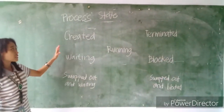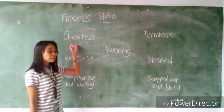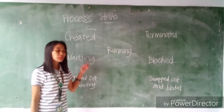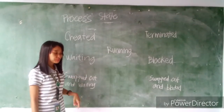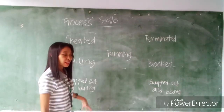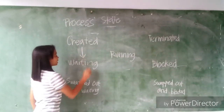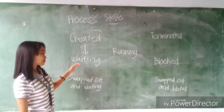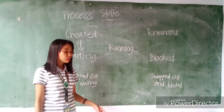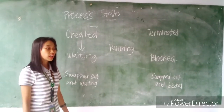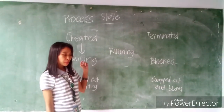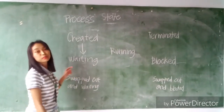This is the illustration of process state. Created — the process moves to the ready or waiting state. Admission will be approved or delayed by a long-term or admission scheduler. Created goes to waiting, also known as the ready state. A waiting process has been loaded into main memory and is awaiting execution on a CPU, to be context switched onto the CPU by the dispatcher or short-term scheduler.